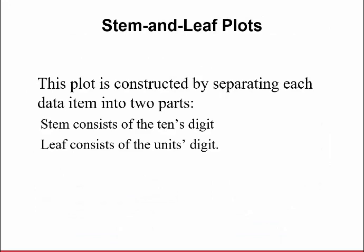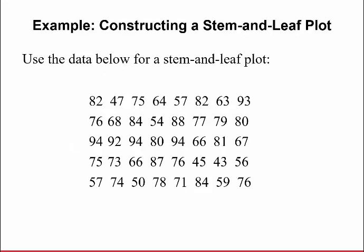Let's talk next about another way to summarize data in what's called the stem and leaf plot. This plot is constructed by separating each data item into two parts. The stem consists of the tens digits and the leaf consists of the units digit for the data. Let me show you an example of what I mean by this.